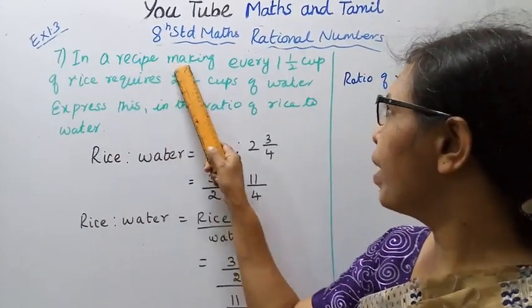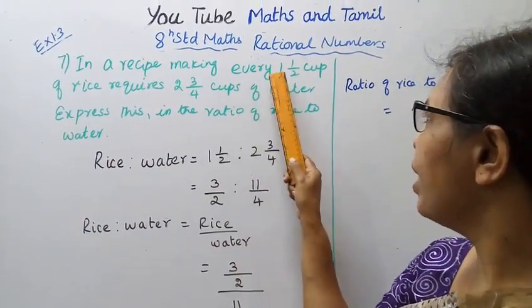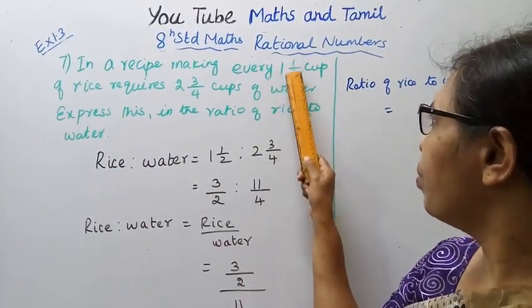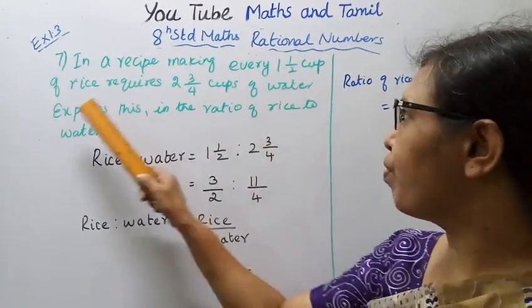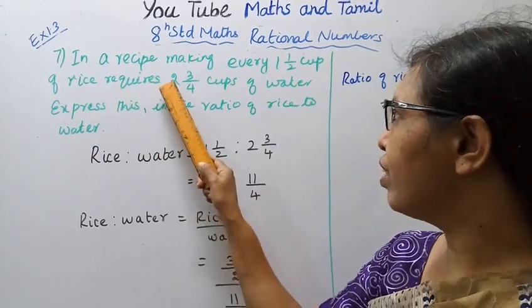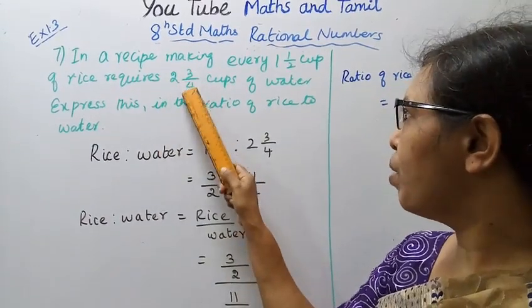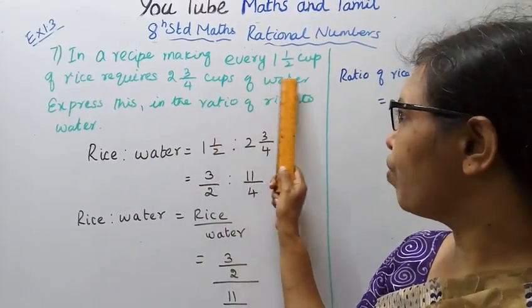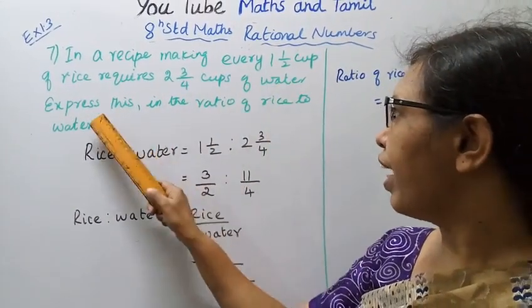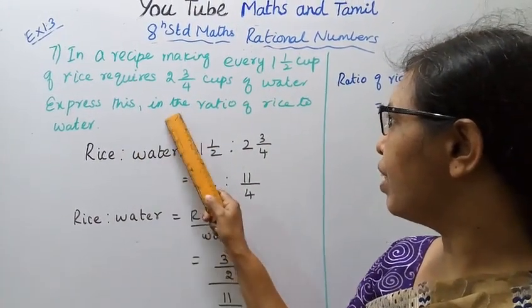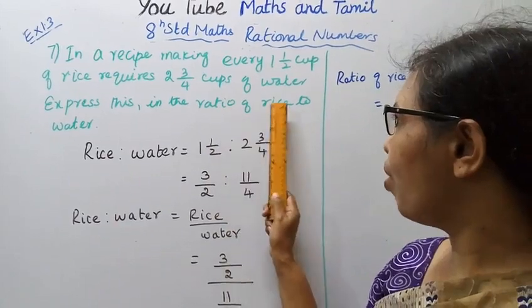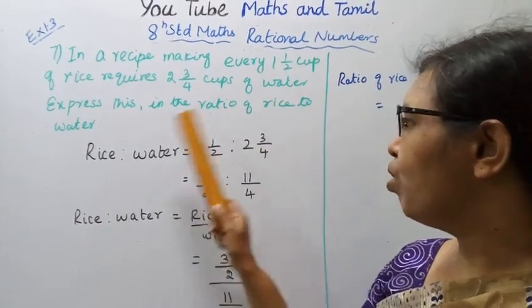In the recipe, making every 1 and 1/2 cups of rice requires 2 and 3/4 cups of water. Express this in the ratio of rice to water.